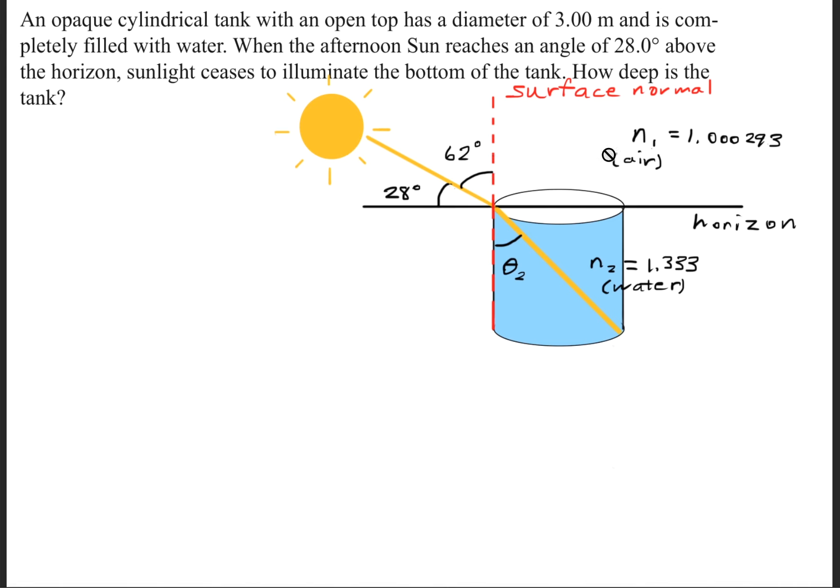Now right here I have the different indexes of refraction. So this one up here is the index of refraction for air, which has a value of 1.000293, and then for water it's 1.333. So we have all the information except we don't know what this theta 2 angle is. So we'll need to go ahead and use Snell's law and figure out what that angle is.